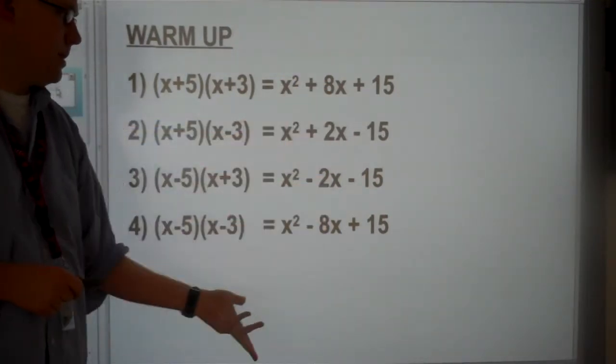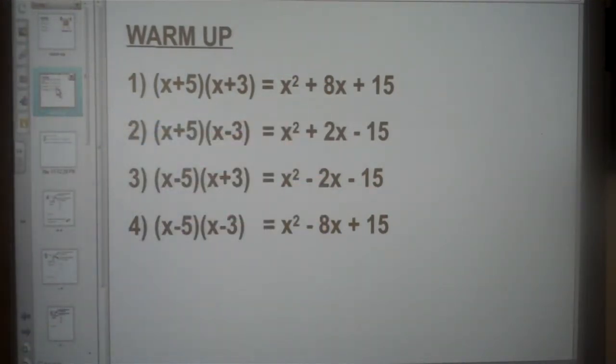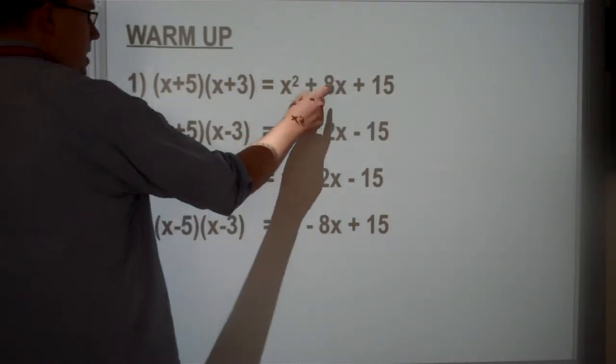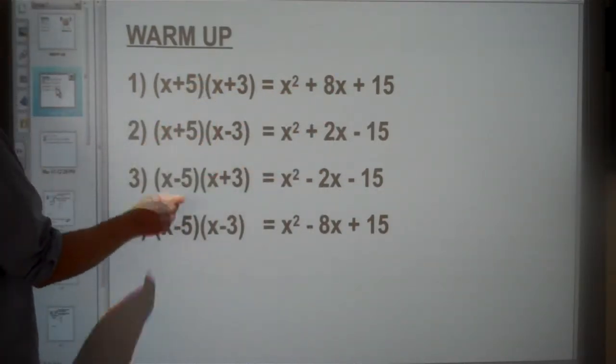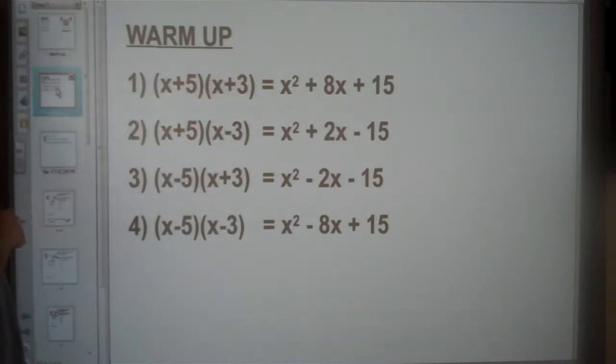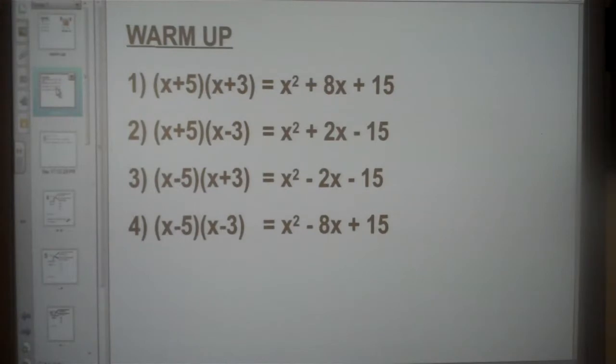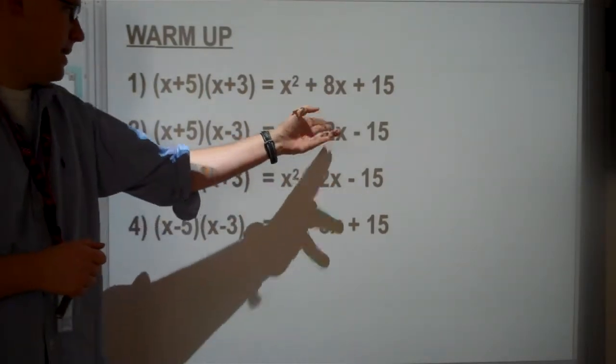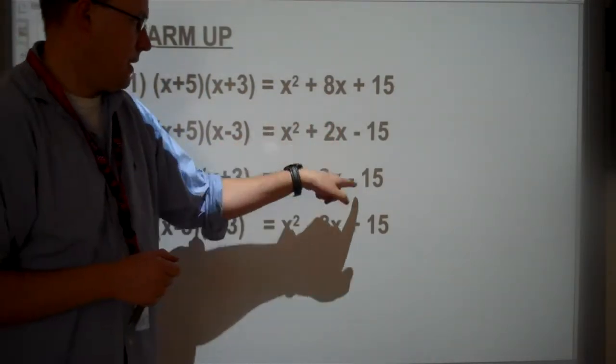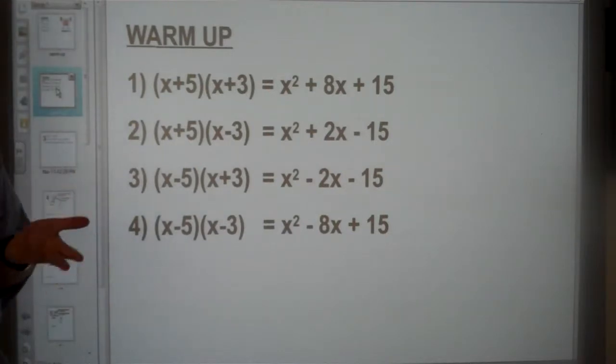Now notice the middle numbers. Some are 8, some are 2. The ones where it is 8 is because I've got 5 and 3. Positive 5 plus 3 gives me positive 8, or -5 take away 3 gives me -8. For 2 and -2, that's the ones where it's subtract here, because 5 take away 3 is 2, or if you do it the other way around, 3 take away 5 gives you -2. We're going to use those clues to help us answer these questions.